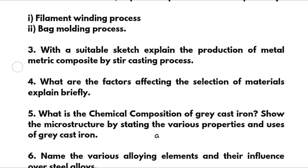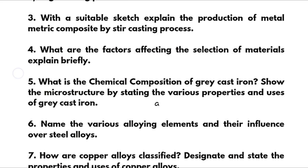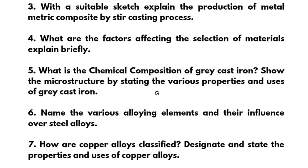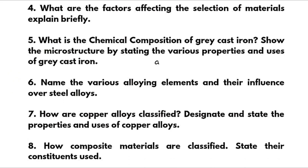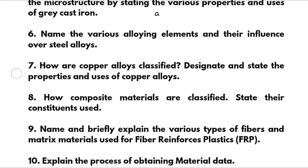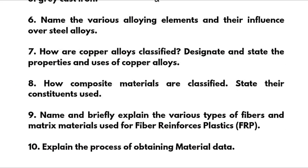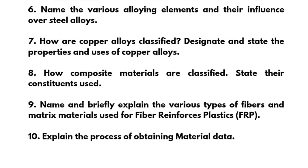Fourth: what are the factors affecting the selection of materials — explain briefly. Fifth: what is the chemical composition of gray cast iron; show the microstructure, stating the various properties and uses of gray cast iron. Sixth: the various alloying elements and their influence on steel alloys. Seventh: how are copper alloys classified, designated, and what are the properties and uses of copper alloys?